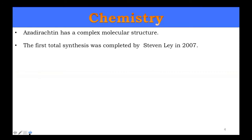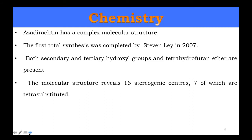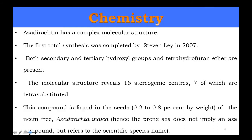Azadirachtin has a complex molecular structure. Its total synthesis was achieved by Steven Ley in 2007. The structure contains secondary and tertiary hydroxyl groups and tetrahydrofuran ether linkages. The structure reveals 16 stereogenic centers, out of which seven are fully substituted.